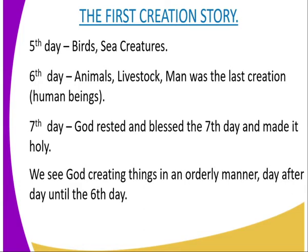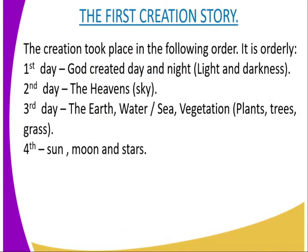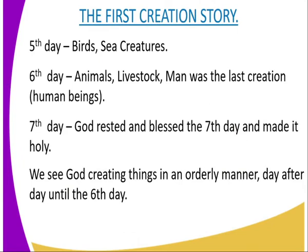So when you are told to describe the order of creation in the first account of creation, start from the first day to the seventh day: one — day and night; two — heavenly sky; three — land, sea and plants; four — heavenly bodies, that is the sun, moon and the stars; five — birds and sea creatures; six — animals, that is livestock, and man; and on the seventh day, God rested on the Sabbath day. Just that simple.